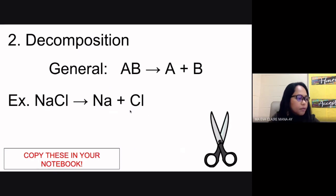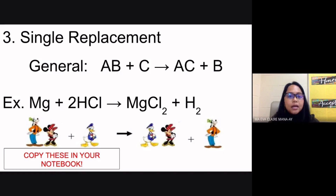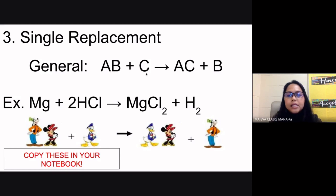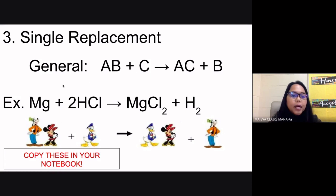The third type is single replacement. The general formula is AB + C → AC + B, where C displaces or replaces B. This is also called single displacement. One substance can replace another only if it is more reactive than it — otherwise, no reaction occurs.